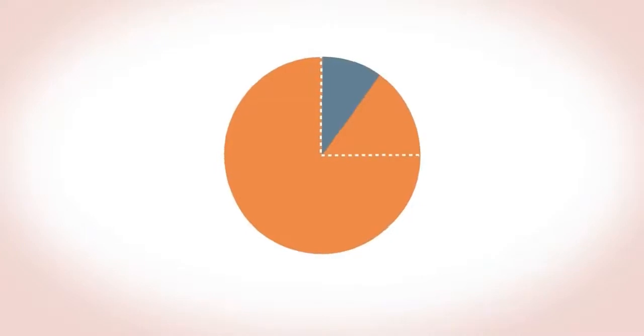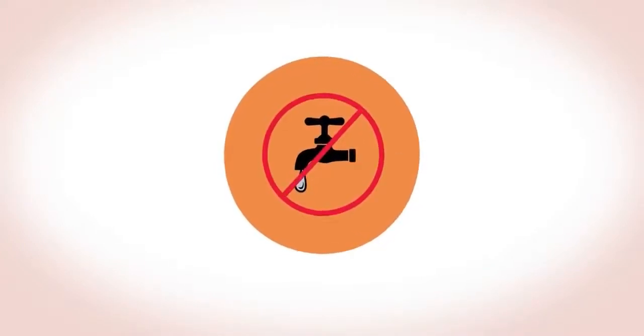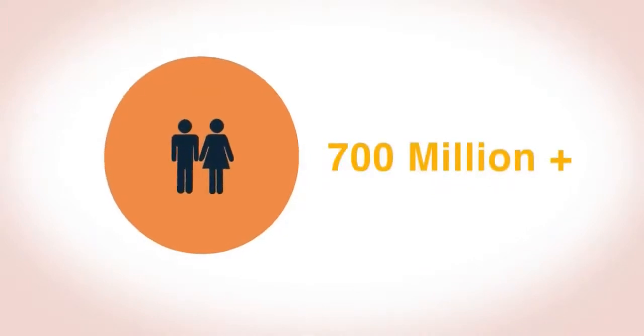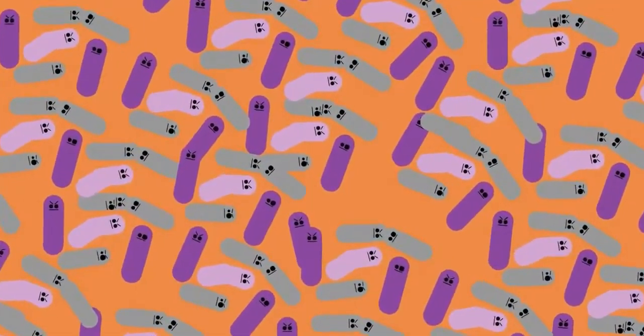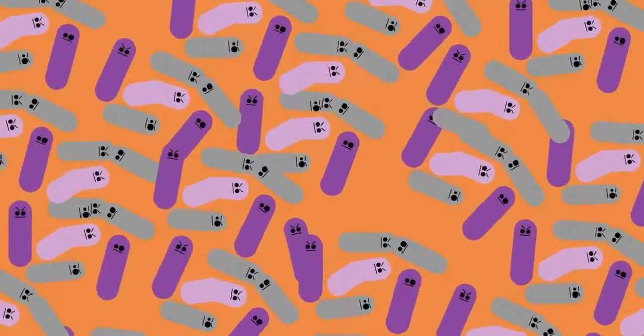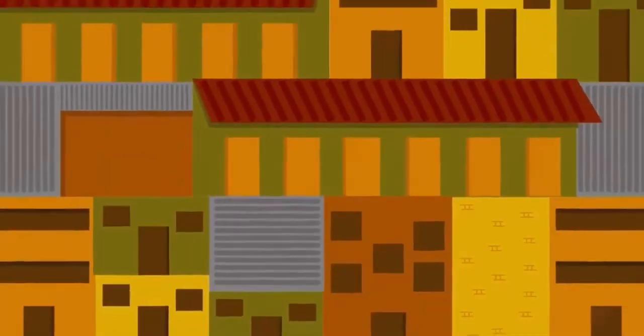The United Nations estimate that around 10% of the world's people do not have access to clean drinking water, that's over 700 million people. The main problem with this untreated water is that it can carry diseases such as cholera, spread through untreated human feces. This is particularly serious in shanty towns near big cities and in refugee camps.